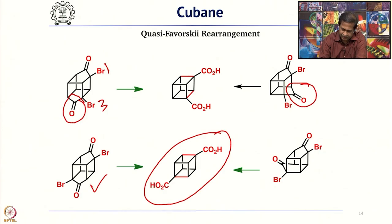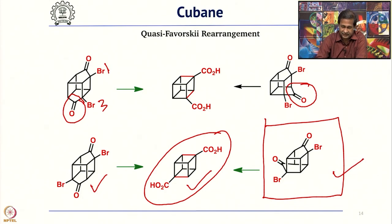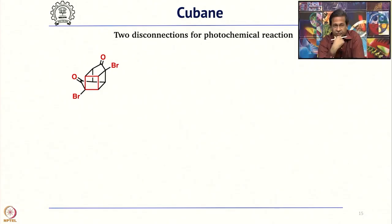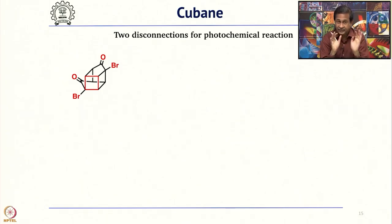Let us take the 1,4-dicarboxylic acid precursor as the target molecule. This compound, upon decarboxylation, gives Cubane and can in principle be made using quasi-Favorsky rearrangement. Now, this compound has 2 four-membered rings. In Cubane there are 6, so by doing two quasi-Favorsky rearrangements in one retrosynthetic step, we removed four 4-membered rings — a significant reduction in complexity and strain.